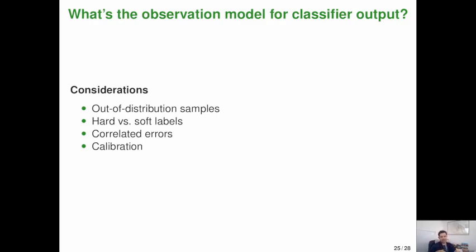Third, there are correlated errors, right? There could be spatial, temporal, spatiotemporal correlation in errors from a model. How do we actually model those errors in these kinds of approaches? And then finally, calibration. It's fairly well known that not all machine learning models are well calibrated. And so we may have to think about, you know, how do you deal with that in an observation model?